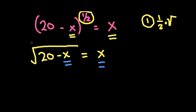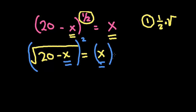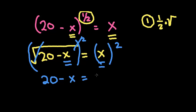We want to go ahead and use the inverse operation and square both sides. If I square this, it will take away my square root, so I end up with 20 minus x. And then on this side, I get x squared.